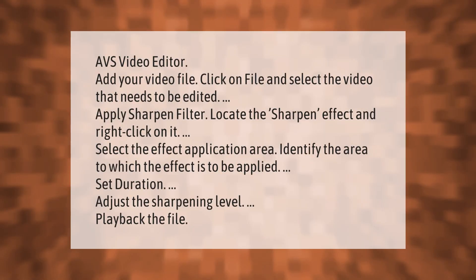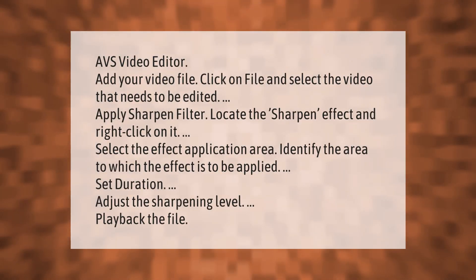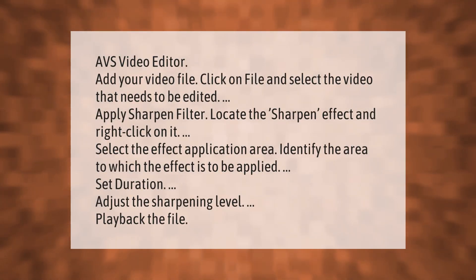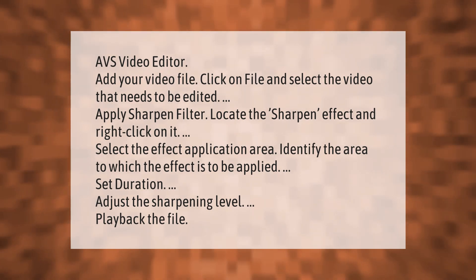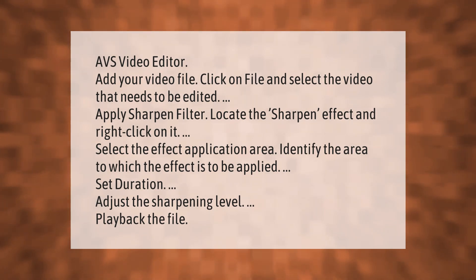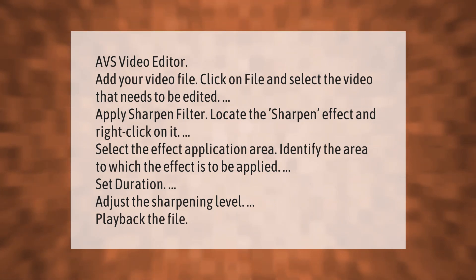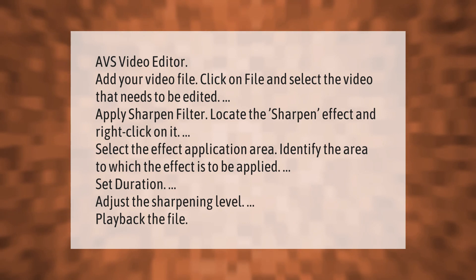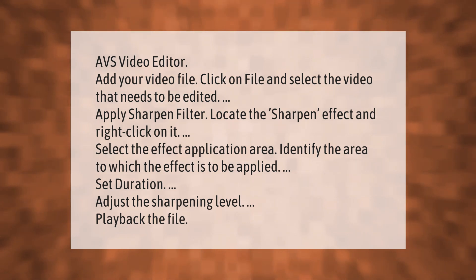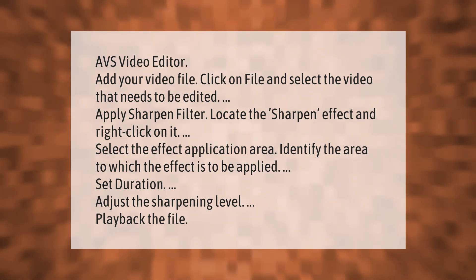Using AVS Video Editor: add your video file by clicking on 'File' and selecting the video that needs to be edited. Then apply the sharpen filter — locate the sharpen effect, right-click on it, and select the effect application area.